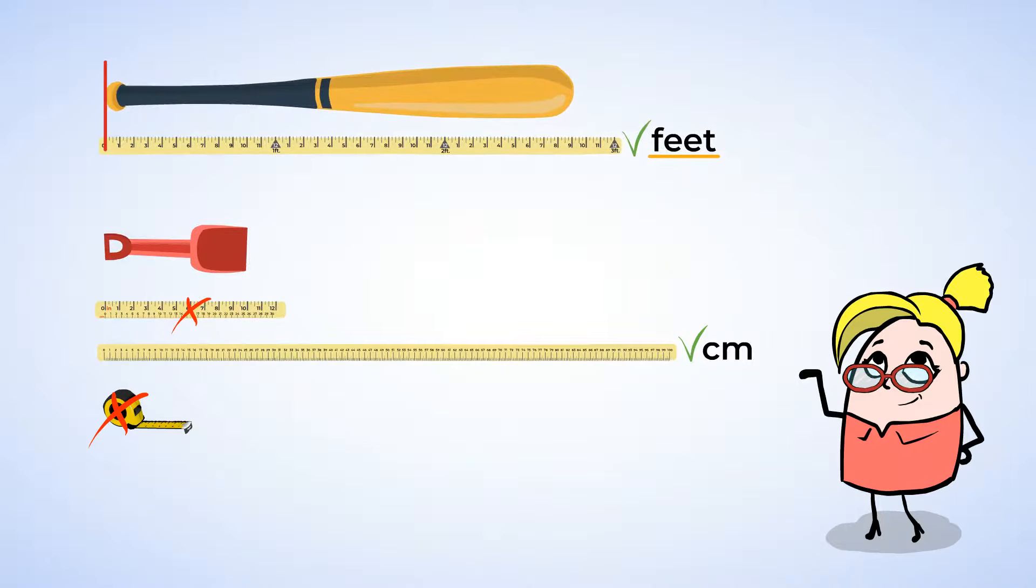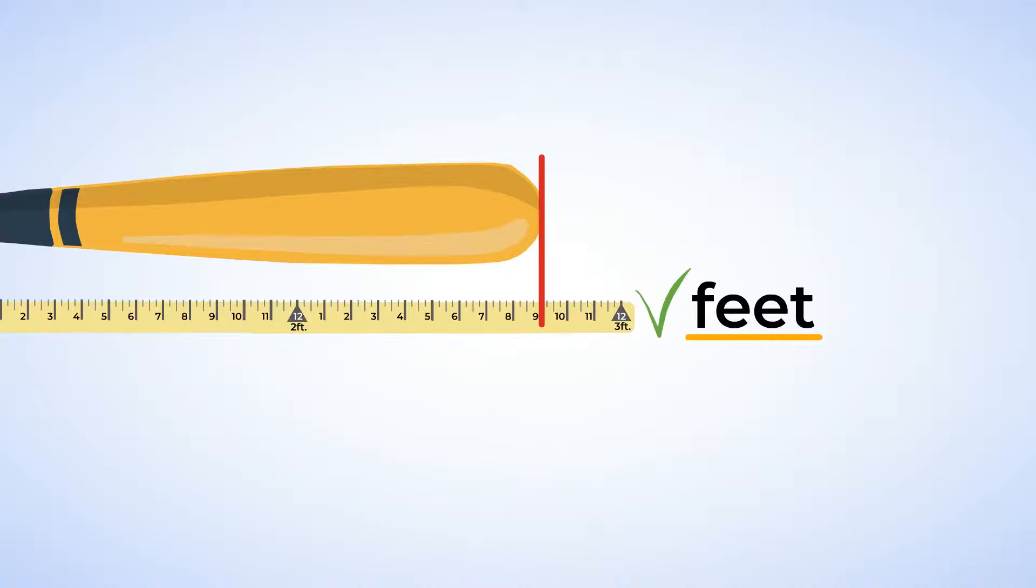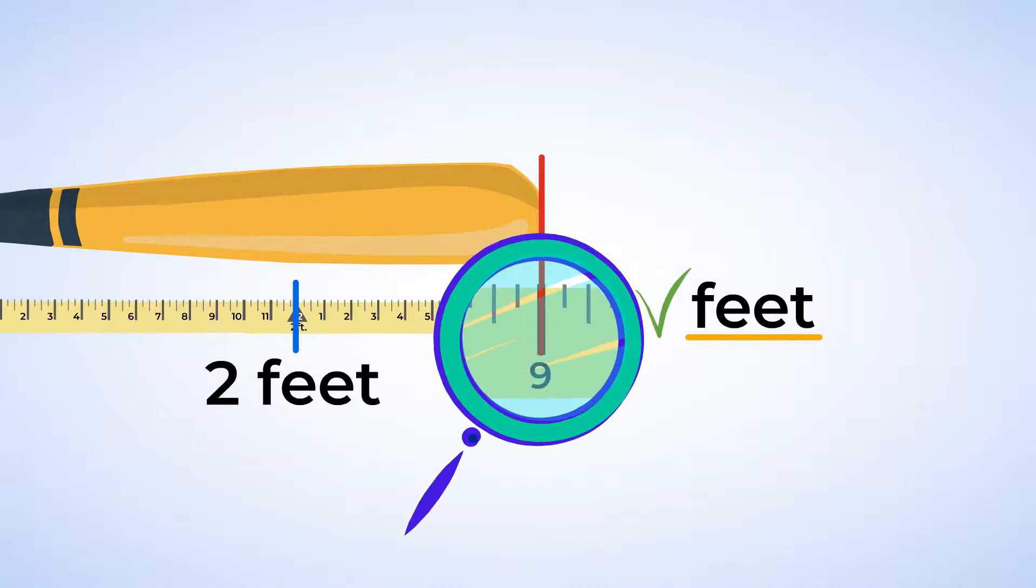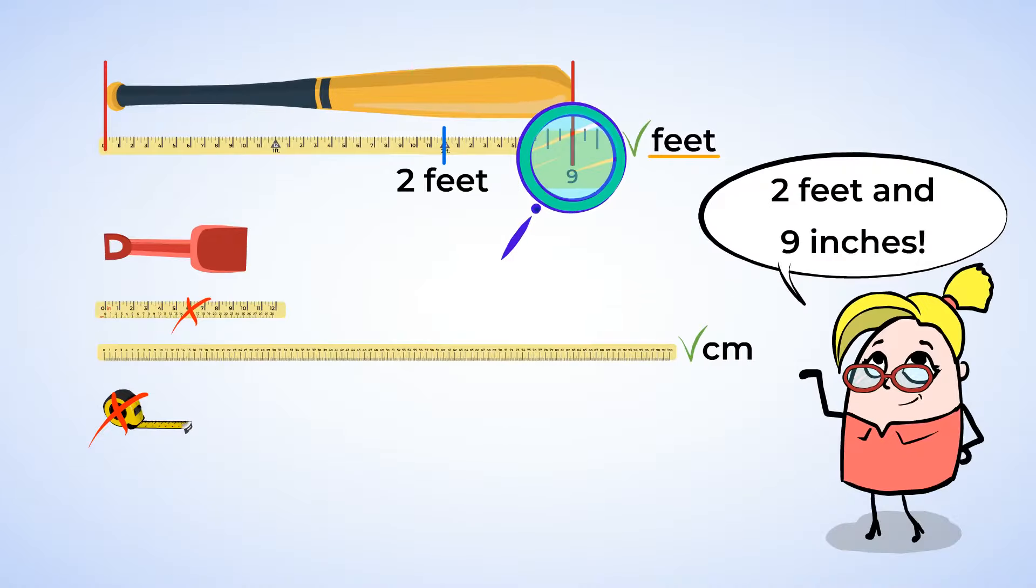The end of the yard stick is aligned with one end of the baseball bat, so we can now measure it and look all the way down the other end. Let's see. We can tell that it's larger than two feet, but smaller than three feet. So it's going to be two feet and some inches. And here you can read that it's two feet and nine inches. Well done! Instead of just measuring in inches, you measured in both feet and inches.